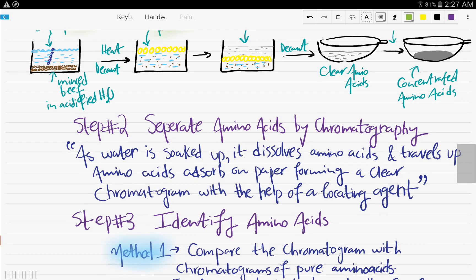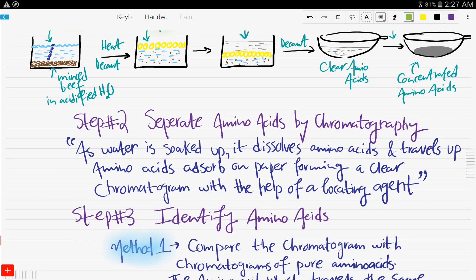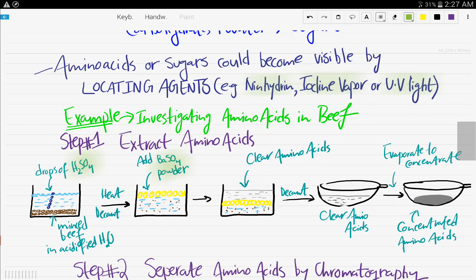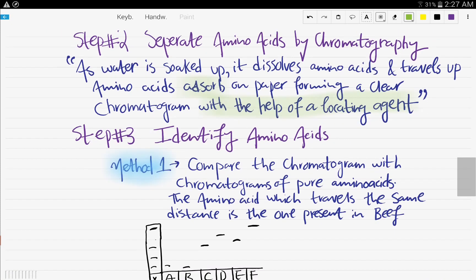Now, you separate amino acids by chromatography, the same exact process as water is soaked up. It dissolves amino acids and travels up. The amino acids adsorb on paper, forming a clear chromatogram. Now, here's the most important sentence in this whole thing. With the help of a locating agent. Use ninhydrin, use the UV light, iodine vapor.